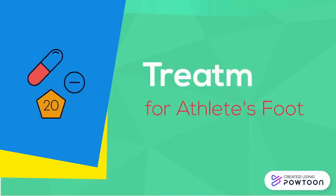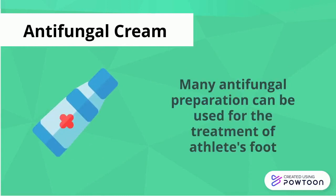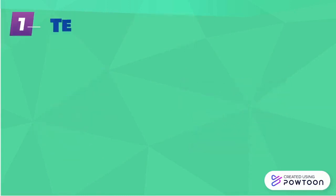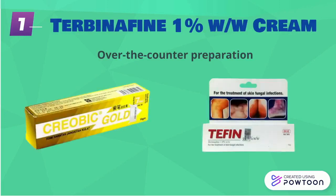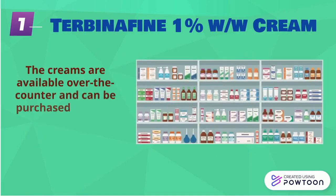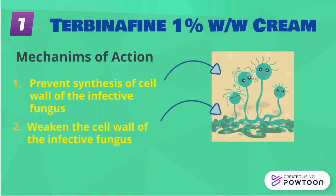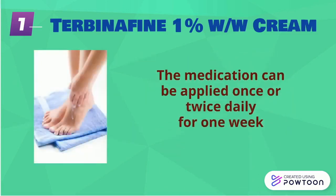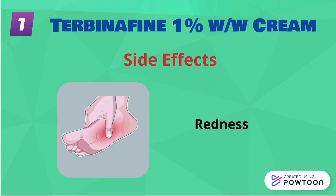The treatment for athlete's foot. Many antifungal preparations can be used for treatment. The first preparation is Terbinafine 1% cream. Examples of commercial products containing this drug are Criobic Gold and Taffin. It is available over the counter without requiring a prescription. The drug acts by preventing the synthesis of the cell wall and weakening the cell wall of the infected fungus. The medication can be applied once or twice a day for one week. Side effects include local irritation such as redness, itching, and stinging.